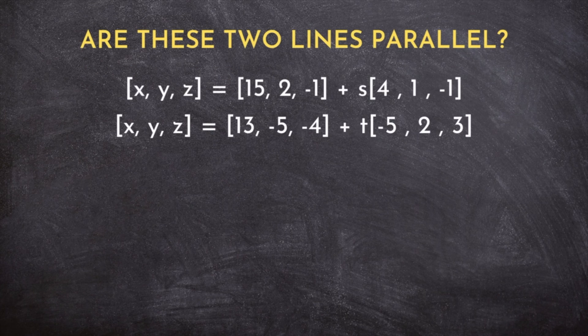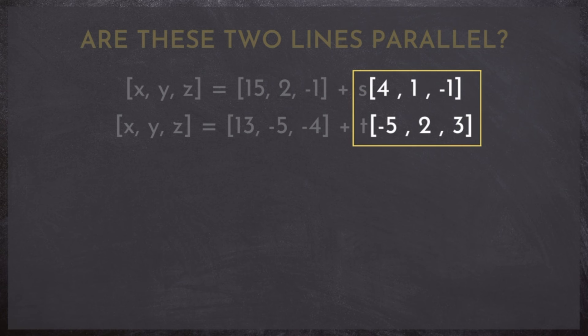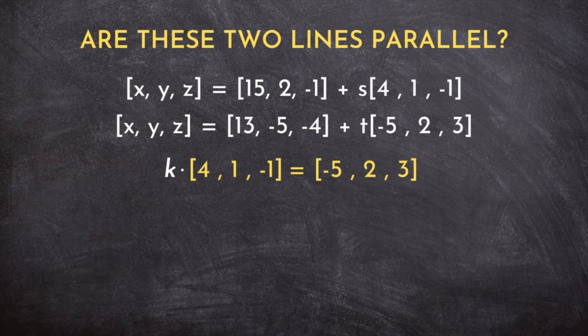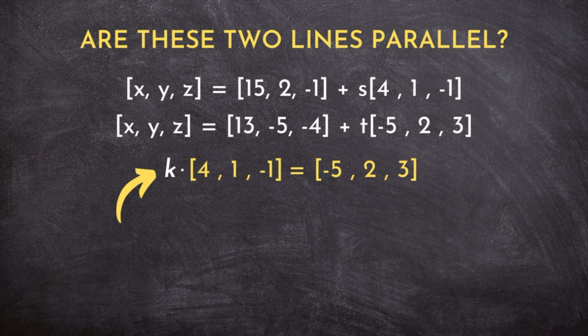Now, if we look at these two lines and more specifically their direction vectors, we want to check to see if one is a scalar multiple of the other. We ask ourselves, is there some factor k that I can multiply by one direction vector to produce the other?